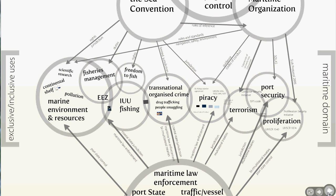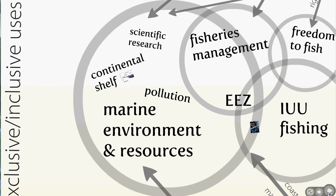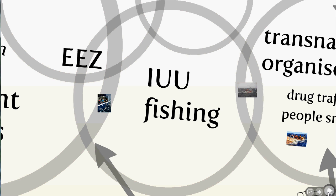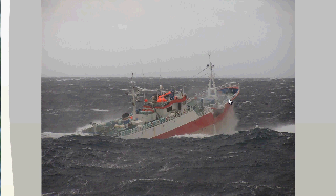The course will include things like marine environment and resource law — where we'll be talking about the continental shelf, pollution, scientific research, and states' control of their exclusive economic zone and ability to manage fisheries. That leads us to the issue of illegal, unreported and unregulated fishing, which can pose severe dangers for the environment and for fish stocks. Here we have a vessel suspected of IUU fishing off the coasts of Antarctica in an internationally managed fisheries area.